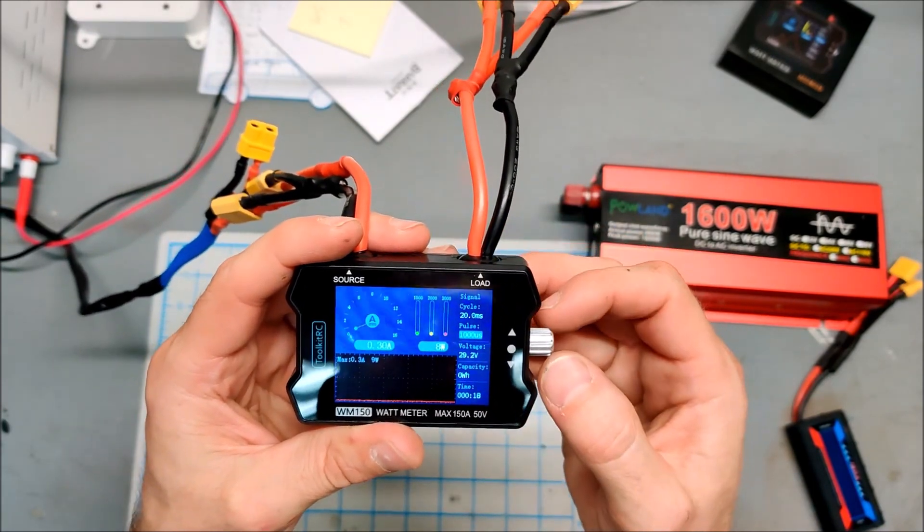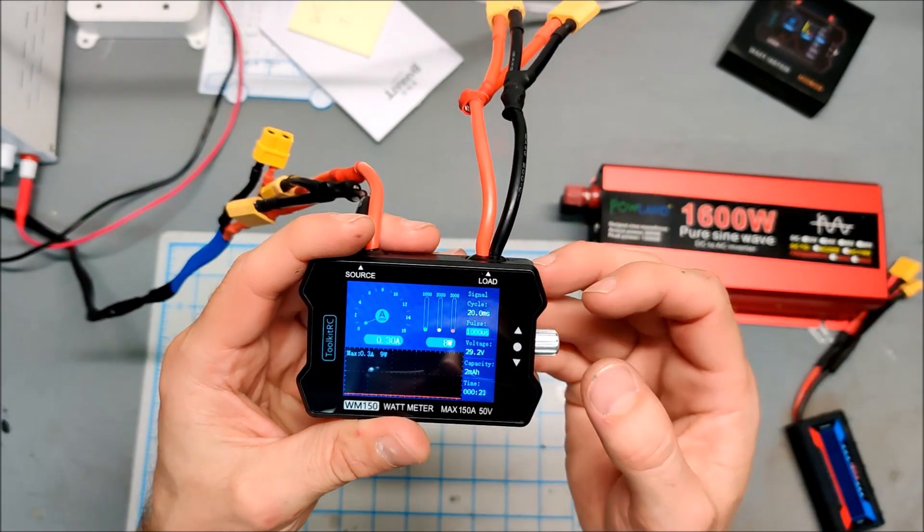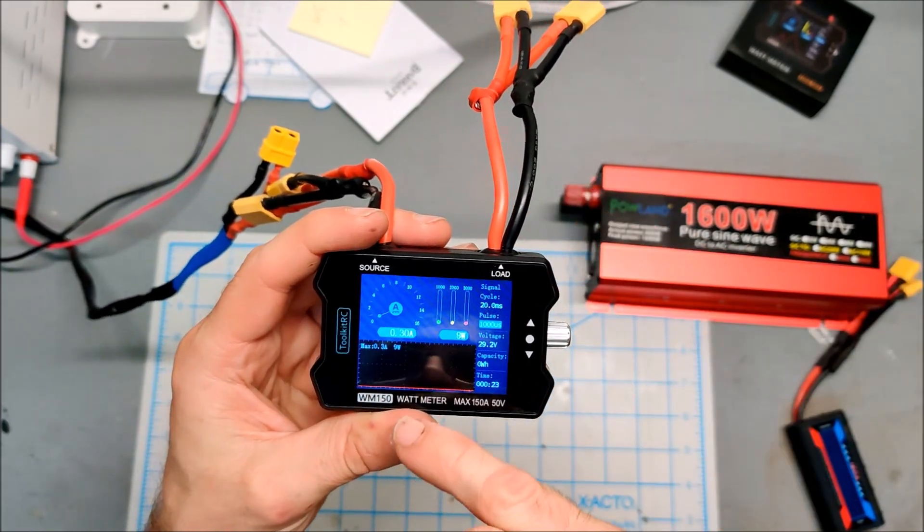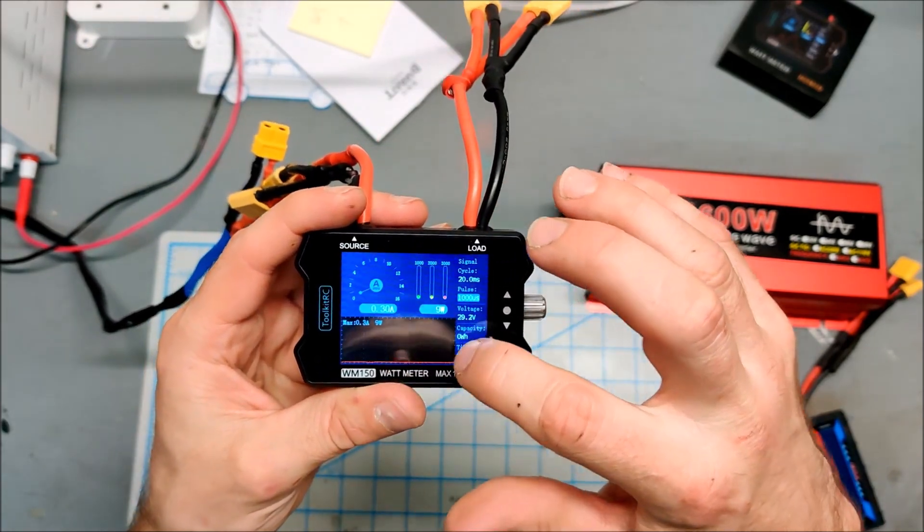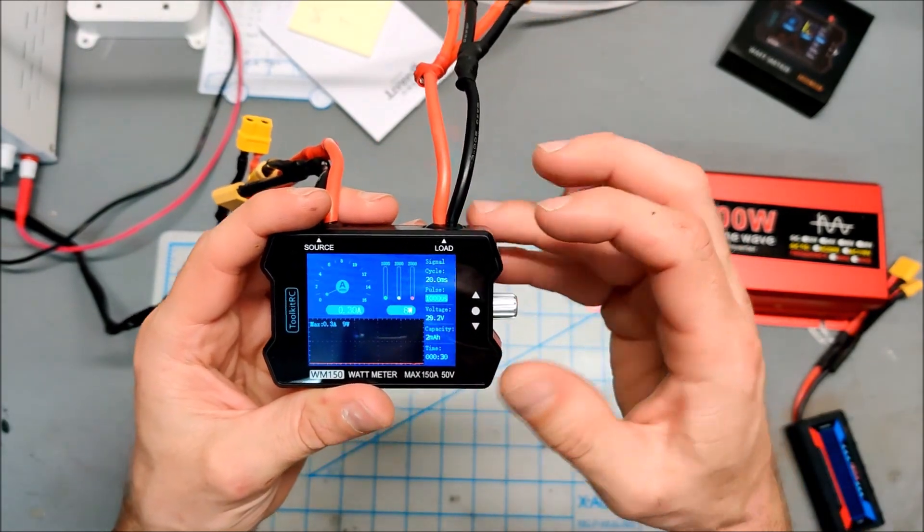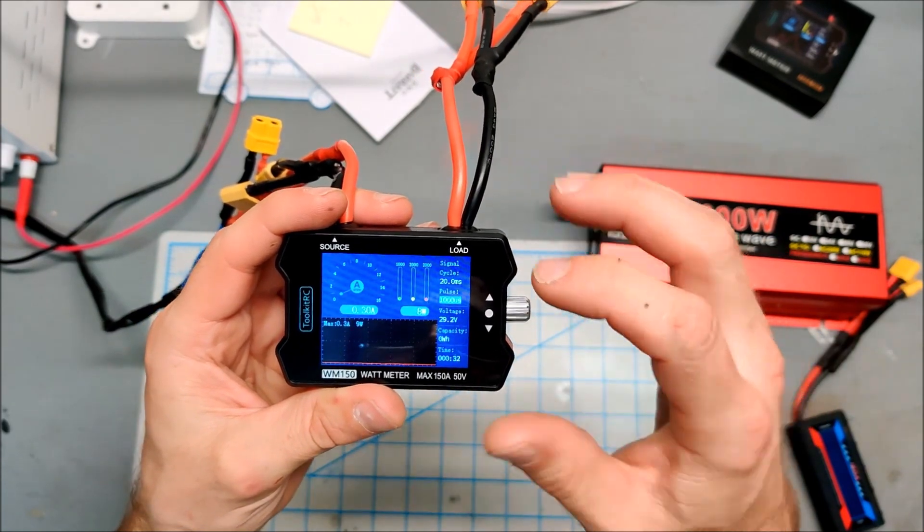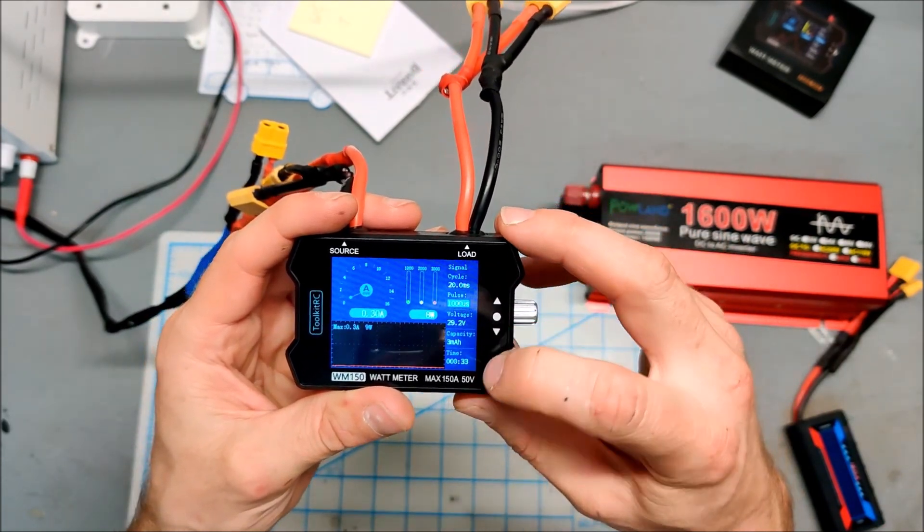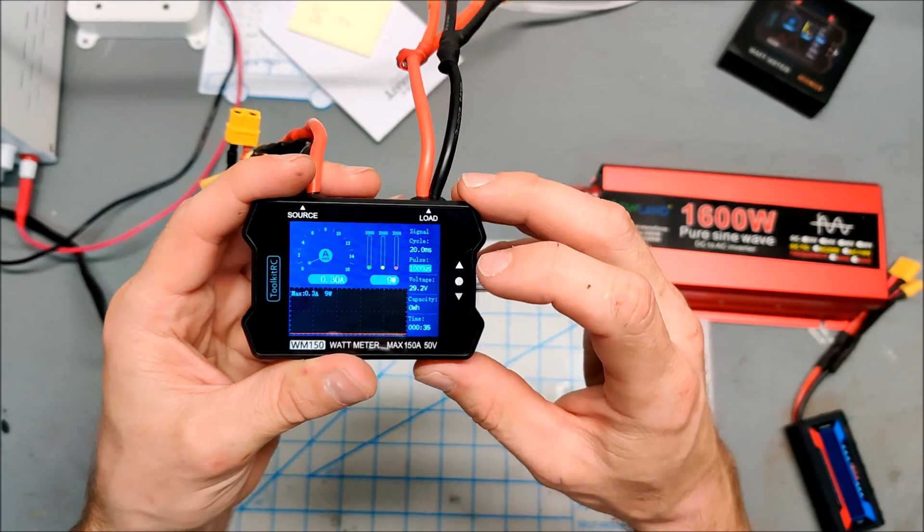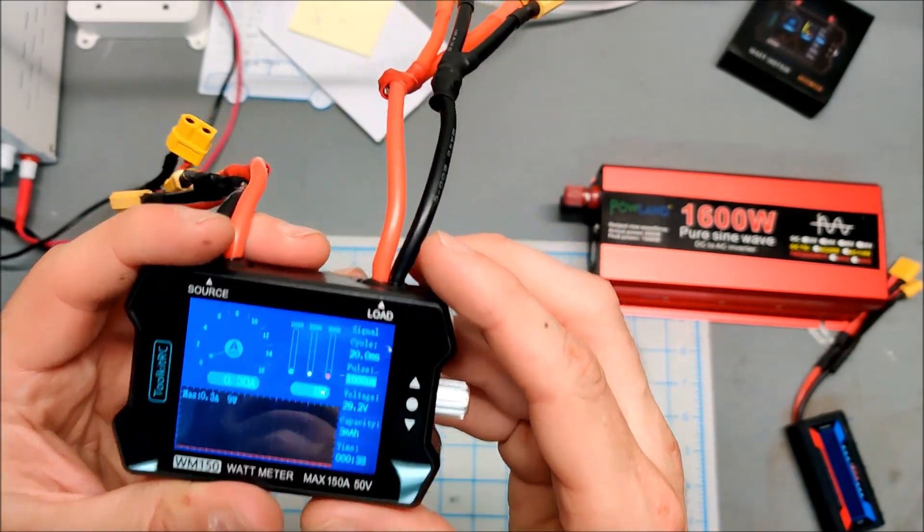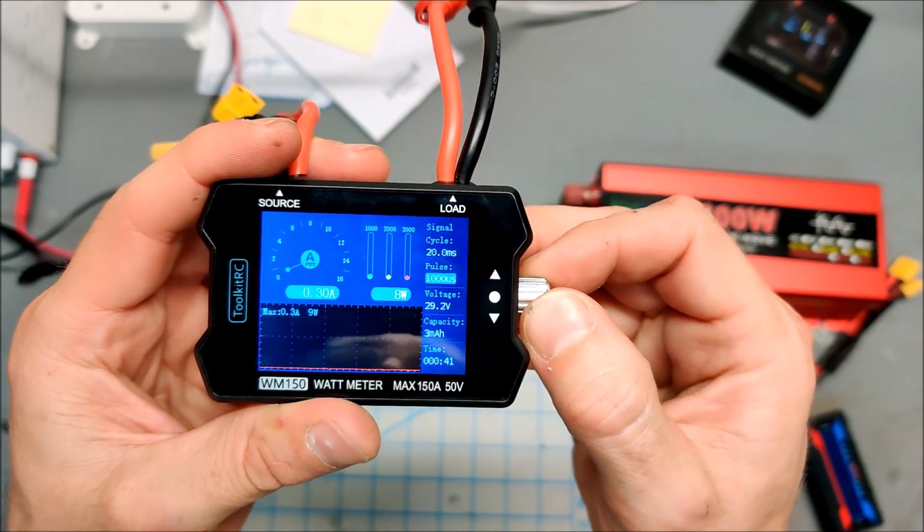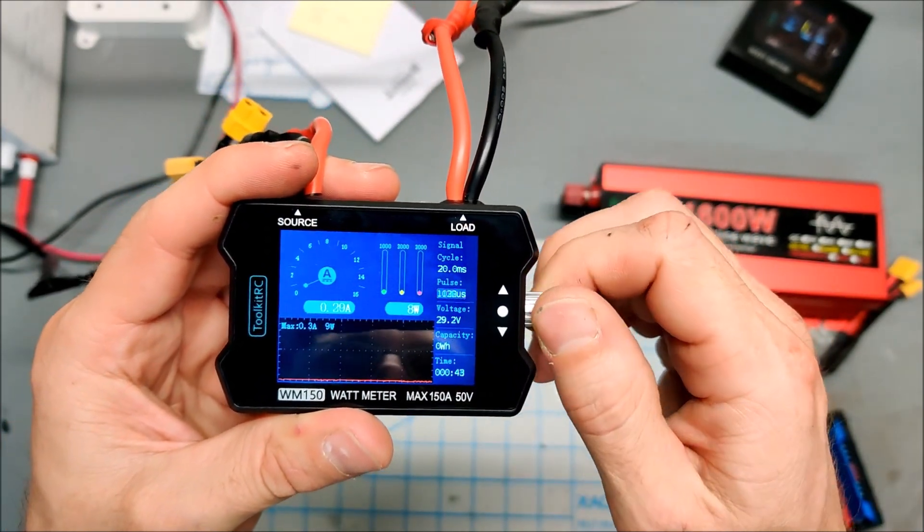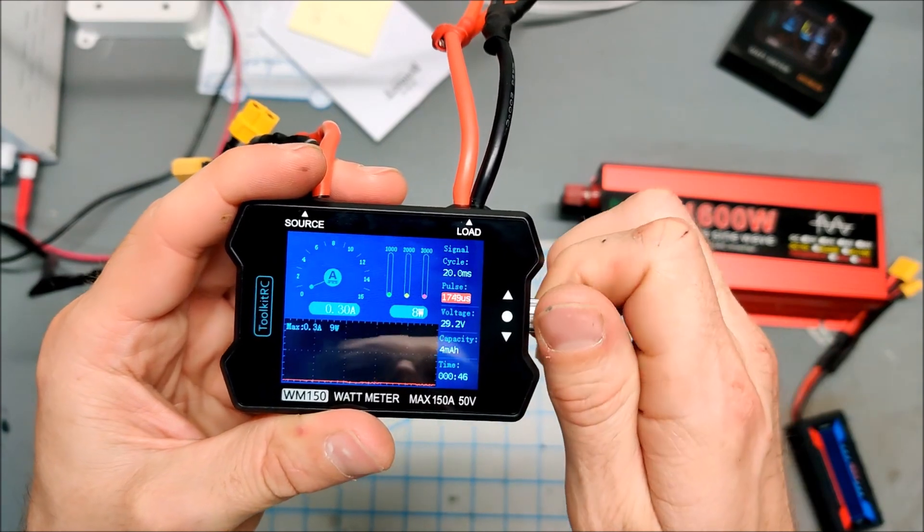It's pretty cool. It actually has a graph, a running graph of your power consumption, and then your capacity, your total capacity time. The display's beautiful. I mean, this is very nice. Now let's see what the jog wheel does.